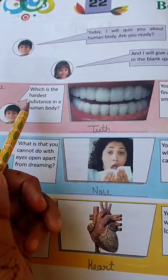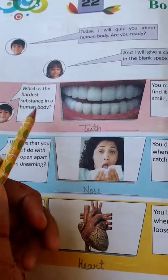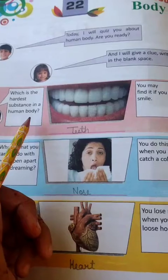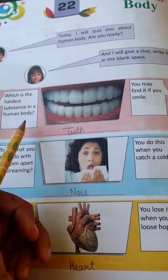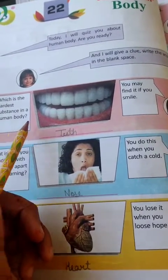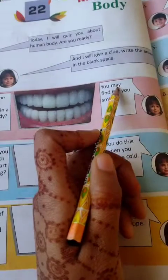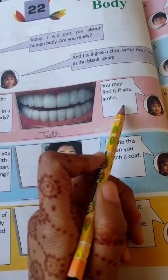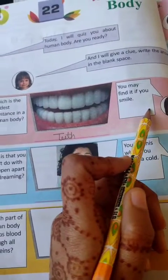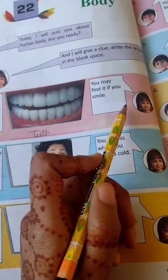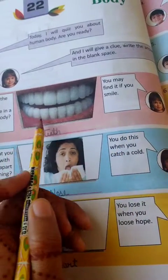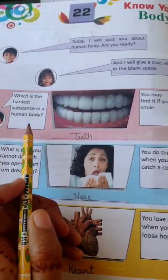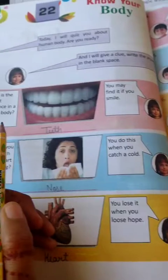Which is the hardest substance in a human body? You may find it if you smile. So if you smile, what do you see? Teeth is the hardest substance in a human body.